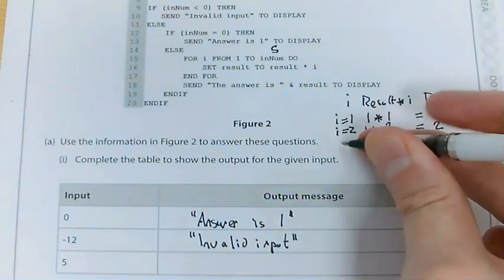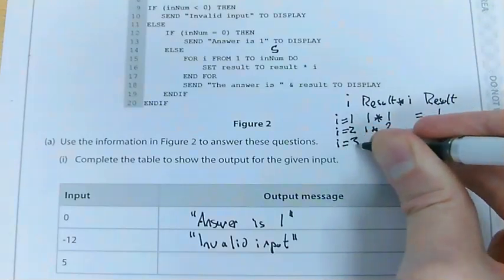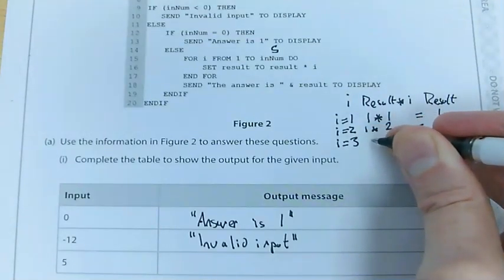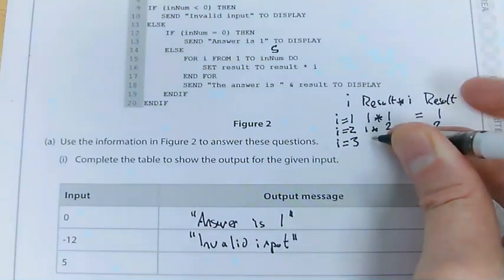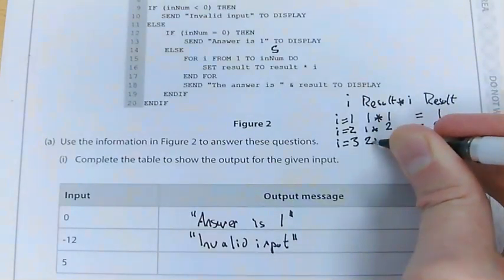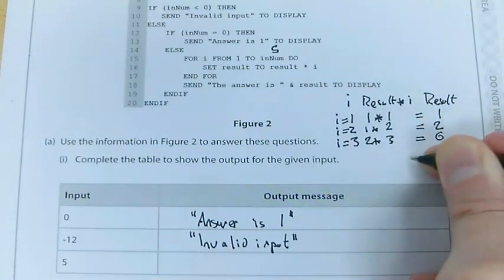Now, so it's i equals 1 to 5. So i now equals 3. So now, result is 2. So it's 2 times by 3. And my output is 6.